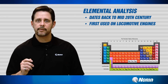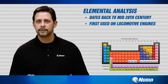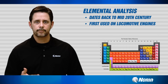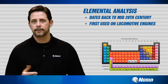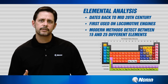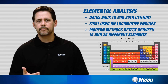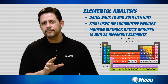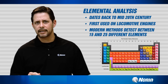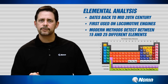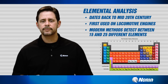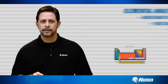However, as time has progressed we found out that there's much more to elemental analysis than just looking at the presence of iron, copper, and lead. Today's elemental analysis reports will give us information related to somewhere between 15 and 25 different elements that are related to both wear metals, contaminant metals, as well as oil additives.